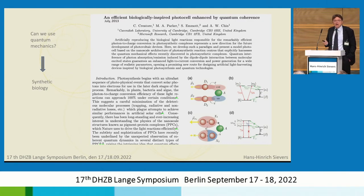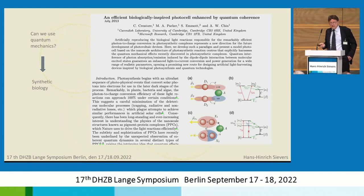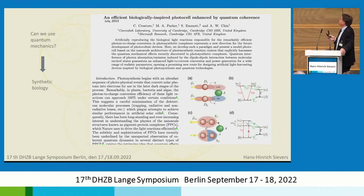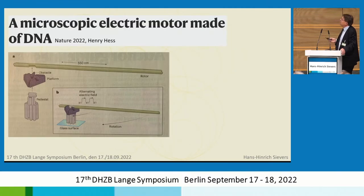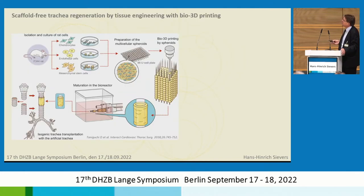And can we use quantum mechanics? Yes. Our MRI is quantum mechanics. Mobile phones are quantum mechanics. Everything with IT is quantum mechanics. But can we use quantum mechanics for biology? That is a big point, and that is indeed a new discipline called quantum biology. And you will hear more of this in the coming years. The first step was this group creating a biologically inspired photocell mimicking the photosynthesis of nature by quantum coherence. Furthermore, just recently published by Henry Hess was a microscopic electrically-driven motor made of DNA, which can do mechanical work.